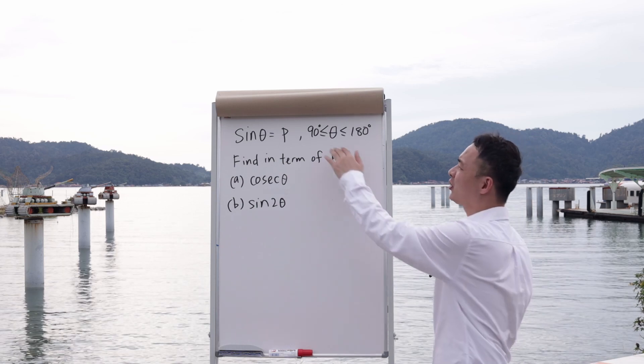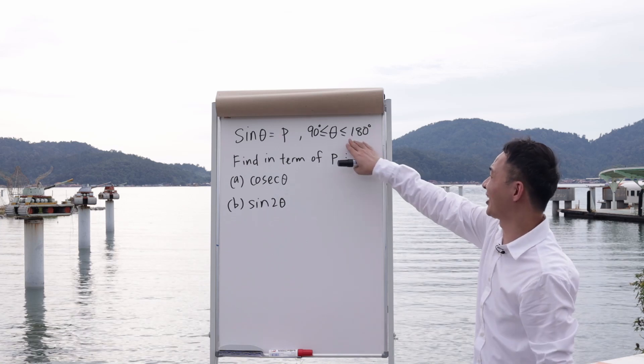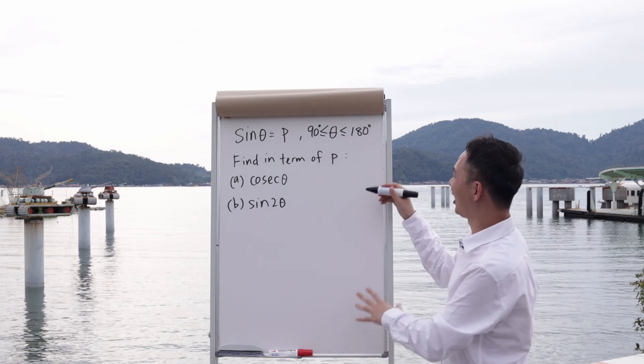and the question also tells you that theta is between 90 to 180 degrees. Why does the question give you the range of theta? Because the question wants you to draw a triangle in the second quadrant, which is between 90 and 180.